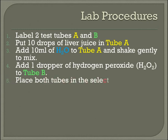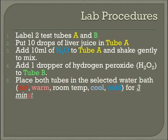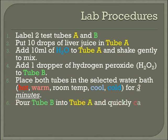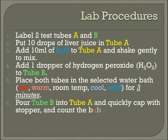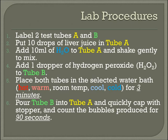I'm going to place both tubes in the selected water bath — either hot, warm, room temp, cool, or cold — for 3 minutes, and gently shake them. Then I'm going to pour tube B into tube A and quickly cap with the stopper, and count the bubbles produced for 90 seconds.